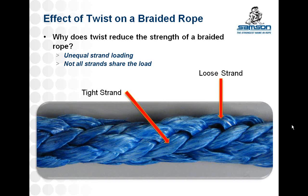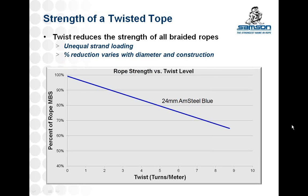When a braided rope is twisted, however, the balance of the rope is disrupted. Shown here is a 12-strand braided rope that has been twisted heavily. As you can see, some of the strands are very tight while others are loose. The loose strands are not able to contribute equally to the strength of the rope, meaning the tight strands carry more of the load and could potentially be overloaded. Since half of the strands are working at reduced capacity, the overall efficiency of the rope is reduced. How much strength is reduced depends on the rope construction and the level of twist. You can actually see space underneath the loose strand, making it clear that it isn't really contributing.